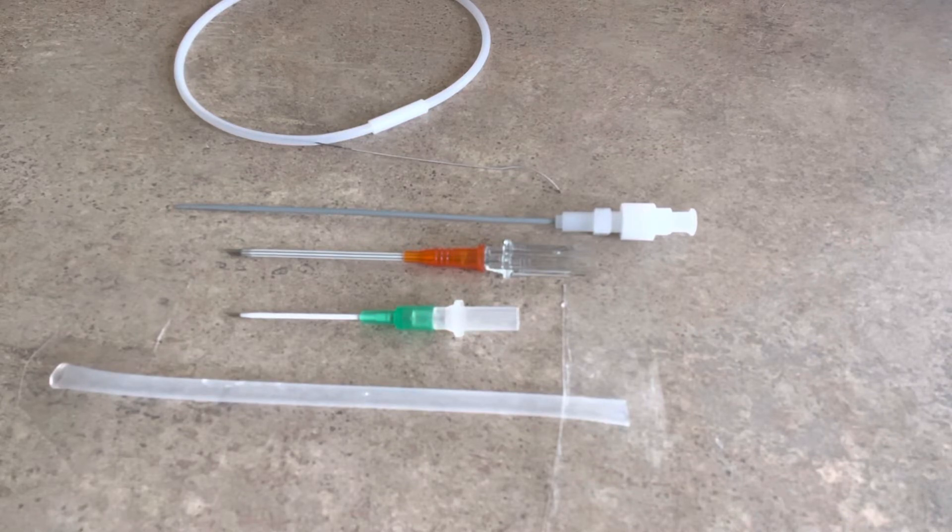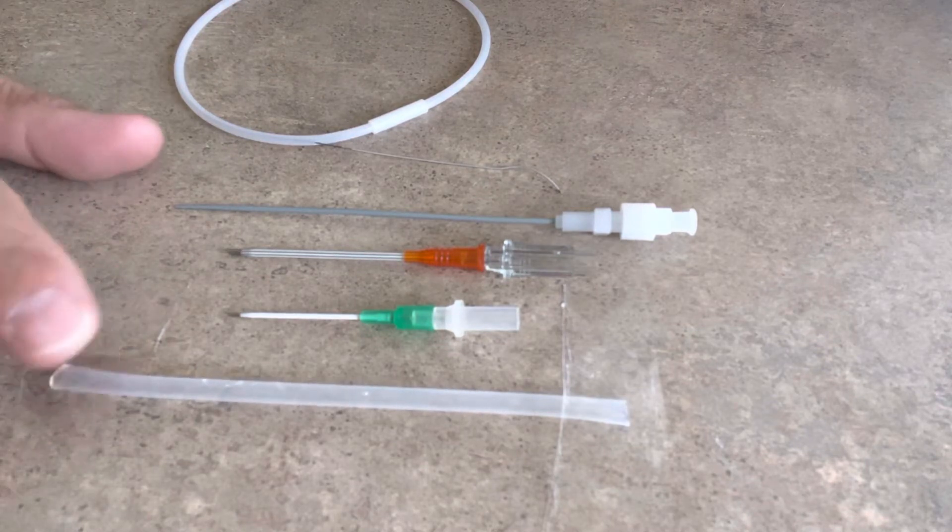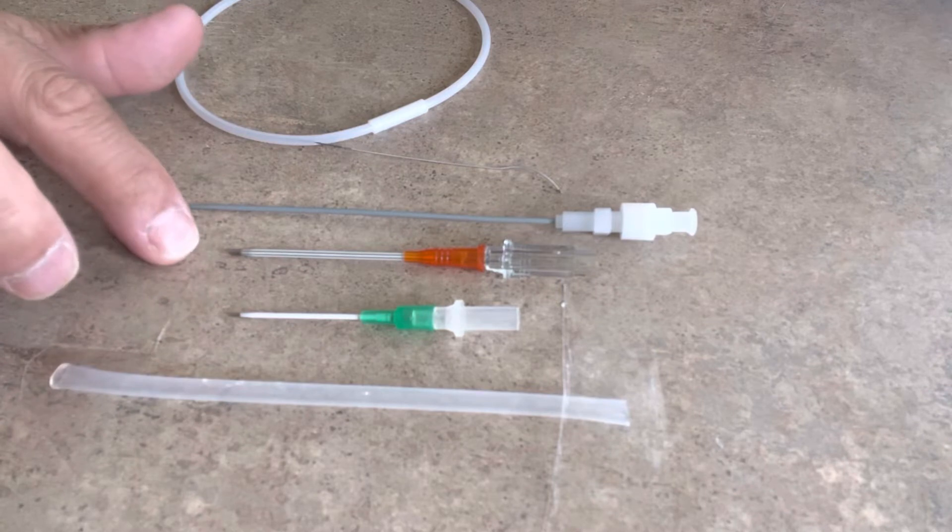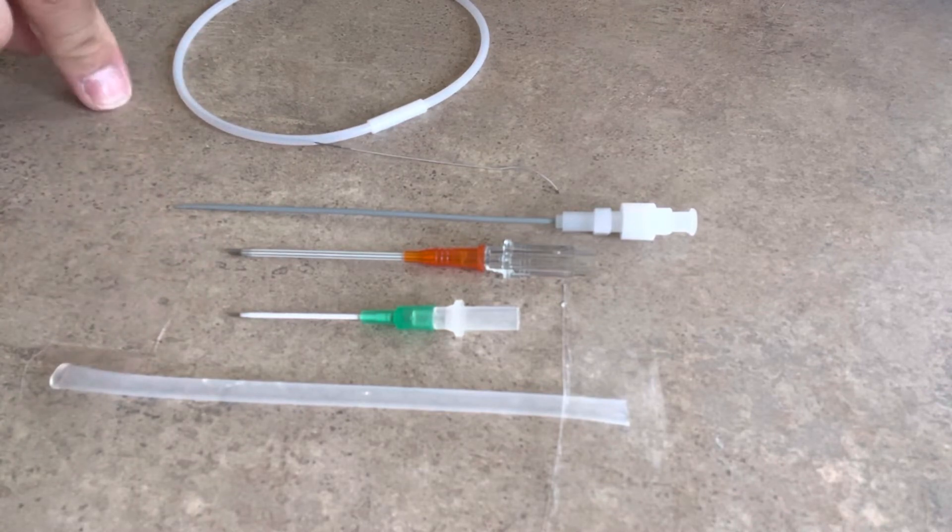And so these are the components that we're going to work with. We have a simulated blood vessel, 18 gauge angiocatheter, 14 gauge angiocatheter, a micropuncture dilator, and a micropuncture wire.